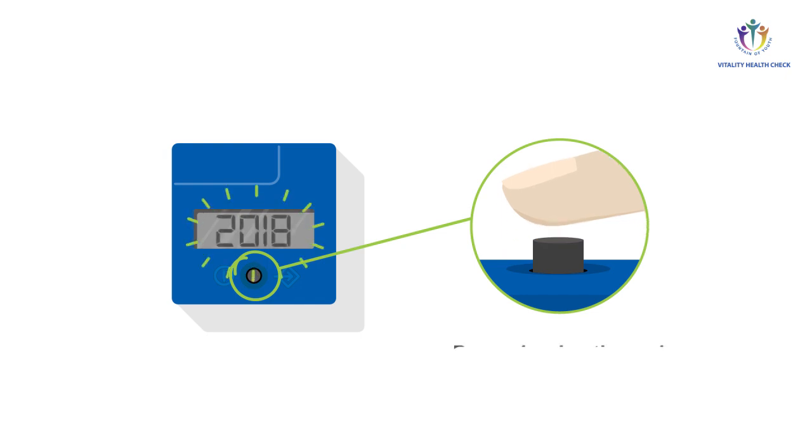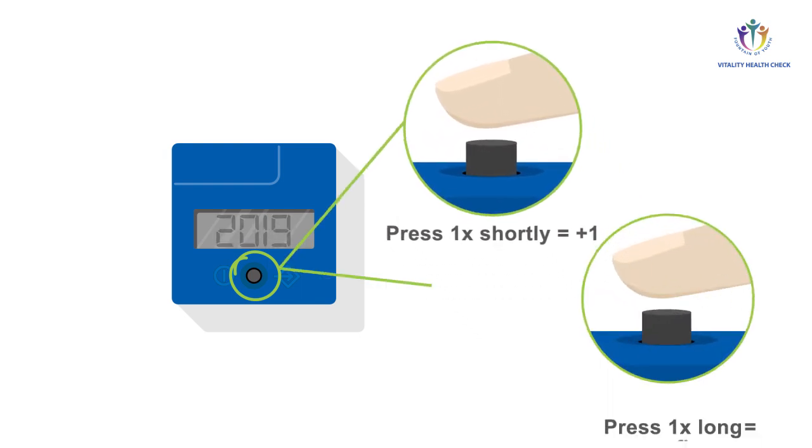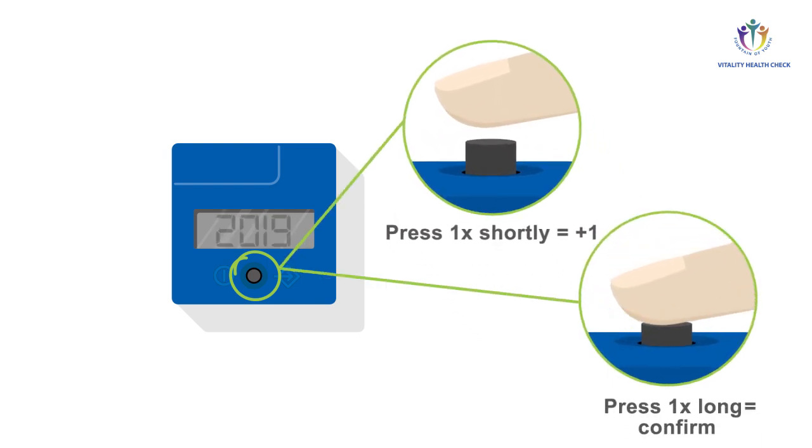At first, you have to set the year. Press the button shortly to increase the number of the year by one. To confirm the new setting of the year, press the button long.